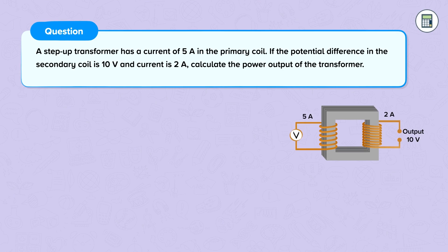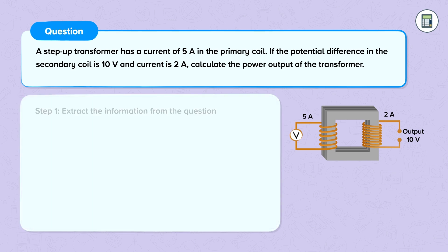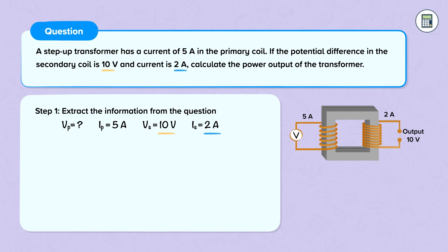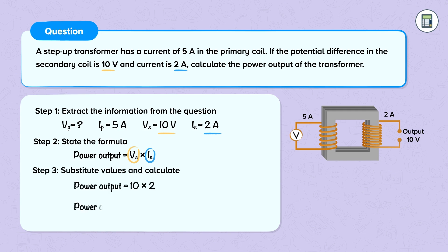Let's look at another question. A step-up transformer has a current of 5 amps in the primary coil, the potential difference in the secondary coil is 10 volts and the current is 2 amps. Calculate the power output of the transformer. Extract the information from the question: potential difference in the primary coil is unknown; current in the primary coil is 5 amps; potential difference across the secondary coil is 10 volts and the current is 2 amps. Step 2: state the formula — power output is equal to potential difference across the secondary coil multiplied by the current in the secondary coil. Substituting values: power output equals 10 multiplied by 2, which gives us an answer of 20 watts.